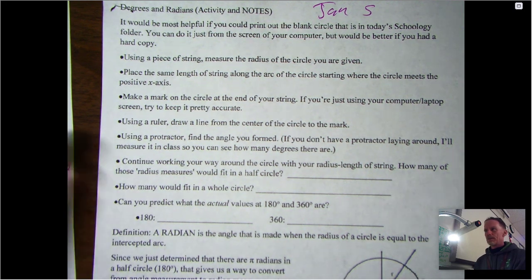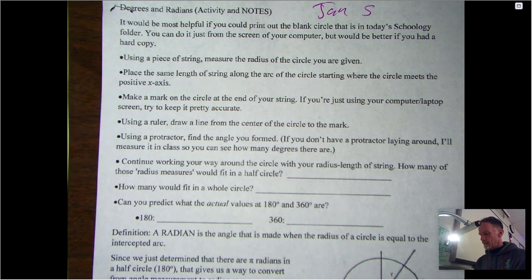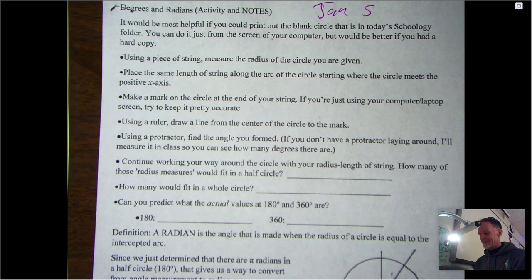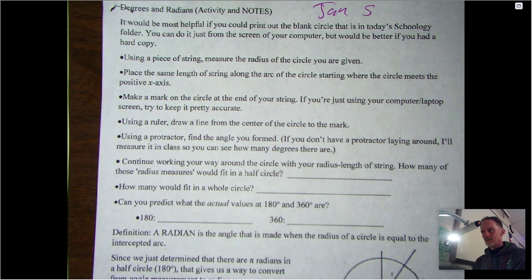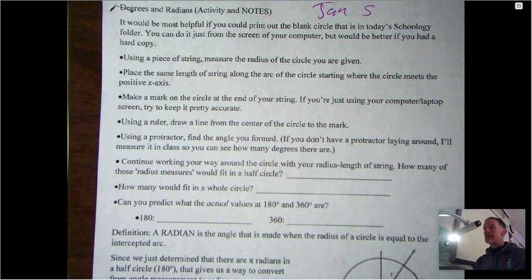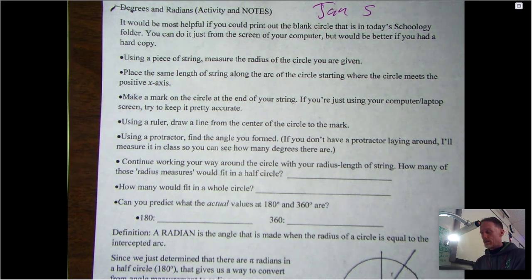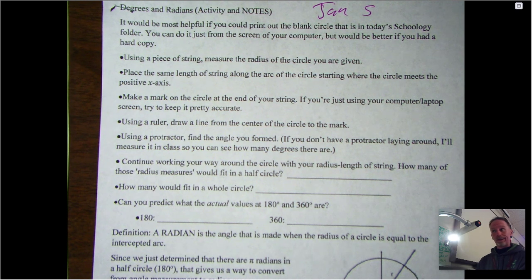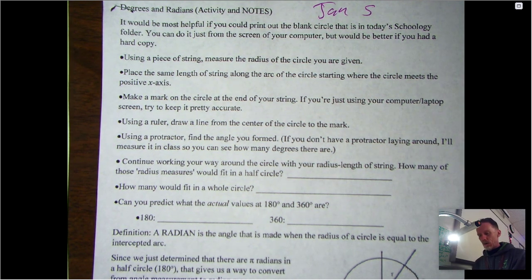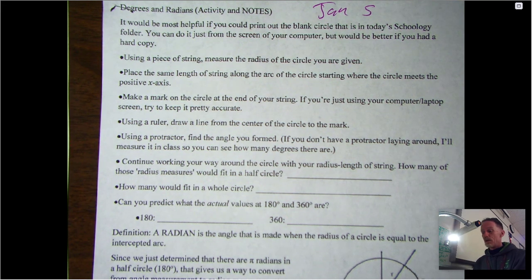All right, hello again pre-calculus people. So in today's video we're going to talk about a different way to measure angles called radian measurement. I know you're familiar with measuring angles in degrees and all that good stuff. There's another way which, as we get into trigonometry, becomes much more important and useful called radians.